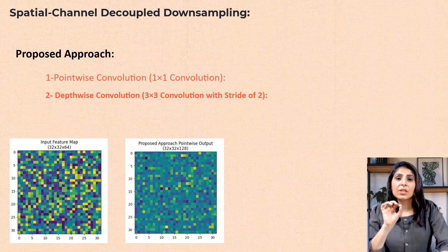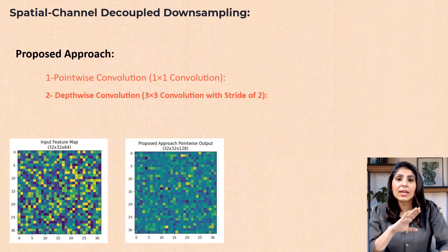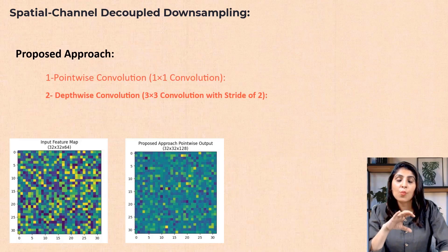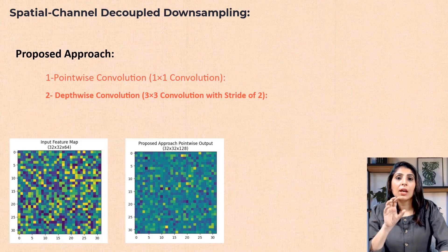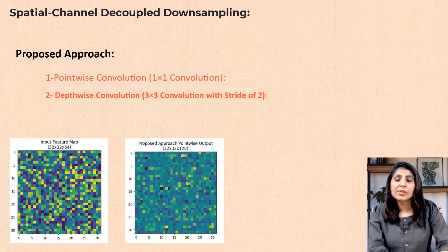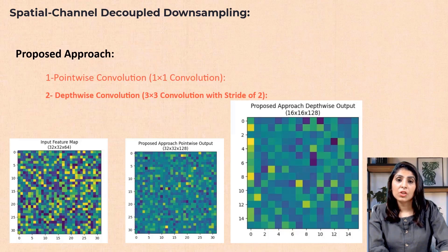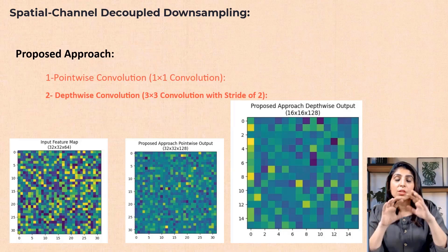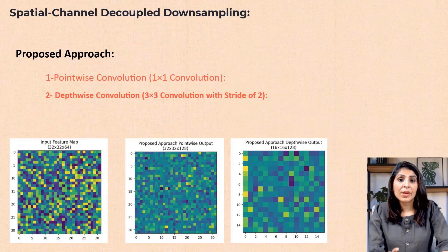The second method is depthwise convolution. Its purpose is to reduce the spatial dimension while maintaining the newly adjusted channel dimensions. It works only on the height and width of the feature map, not on the channels. A separate 3x3 filter is applied to each channel, reducing the spatial dimensions by half — so the feature map goes from 32x32 down to 16x16. This is how the proposed approach divides the task into two parts.